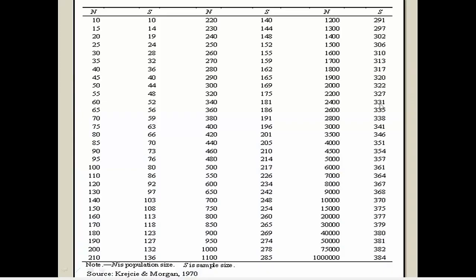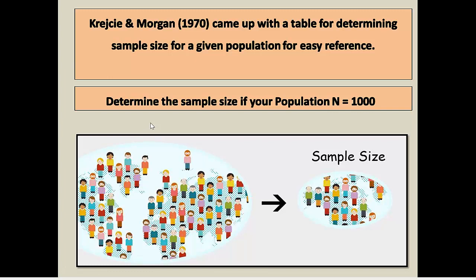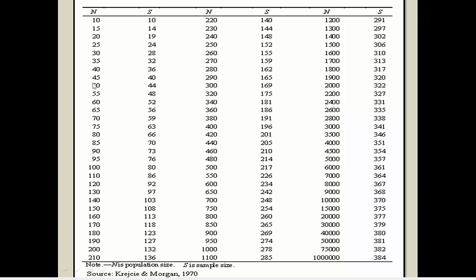Look at the table. There are two main columns: the first column is N and the second column is S. Capital N represents your population and small S represents the sample. According to our example, we want to find the sample when the population is 1000, so in the N column we find 1000. If capital N is equal to 1000, then your sample S is equal to 278.